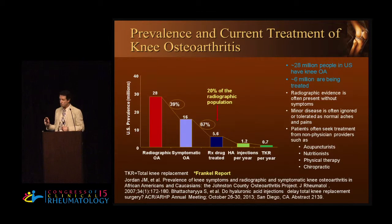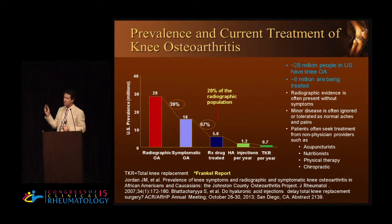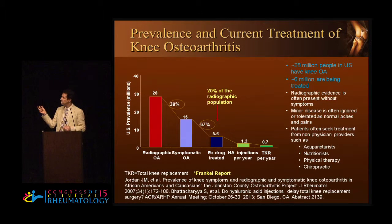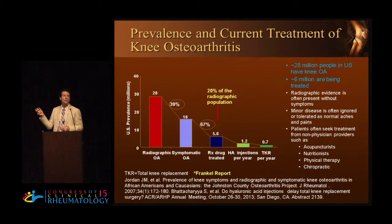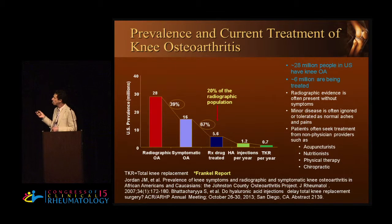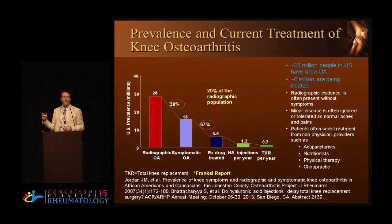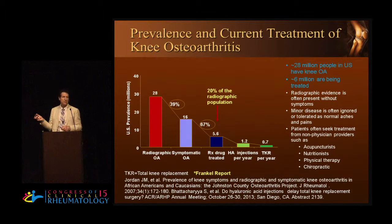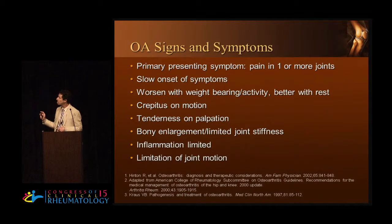Let's move right into the demographics of this disease. You can see that the number of millions of people in this country who have OA radiographically is 28 million. Symptomatically, about 16 million have symptoms, and about 6 million are actually getting treated with medications, 1.2 million with IHA injections, and total knee replacements is 700,000 and rising very quickly in this country.